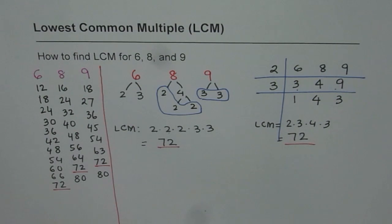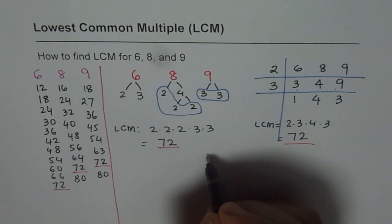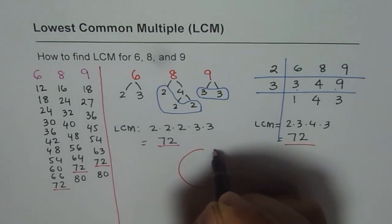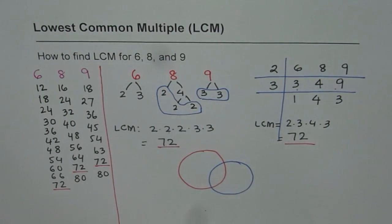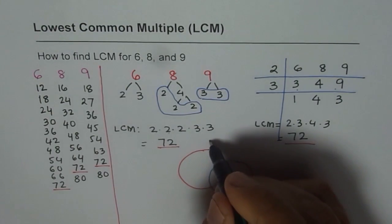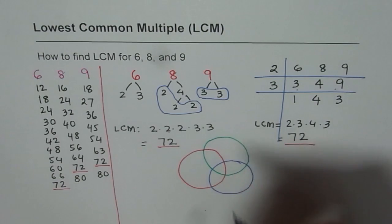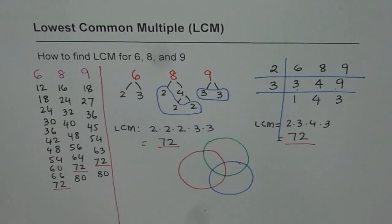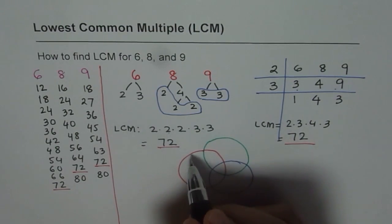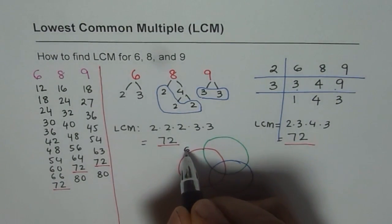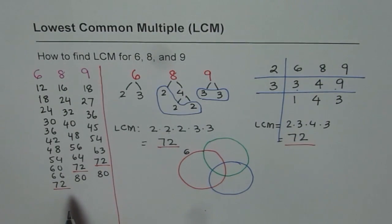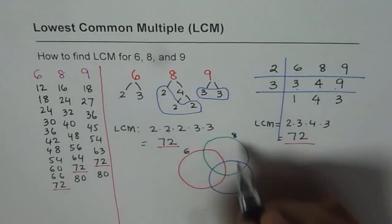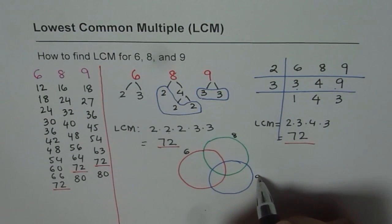Now let me show you the fourth method also — I will make a Venn diagram. So now I am making three different circles for three numbers. These are my three different circles — this is a very interesting method. In these circles, I will write down all the factors of our numbers. The first circle is for number 6, the second circle is for number 8, and the blue one is for number 9.